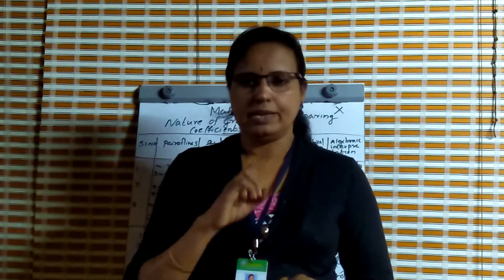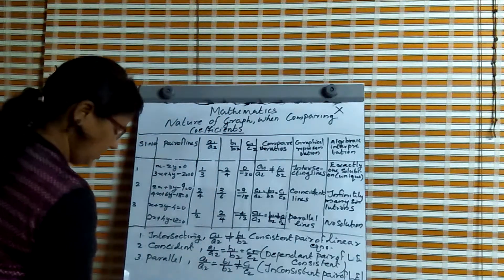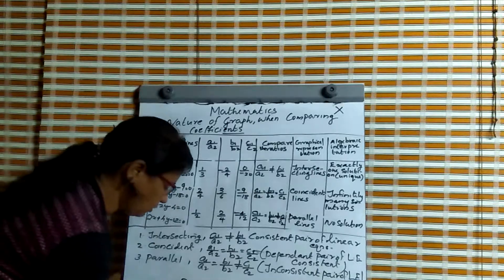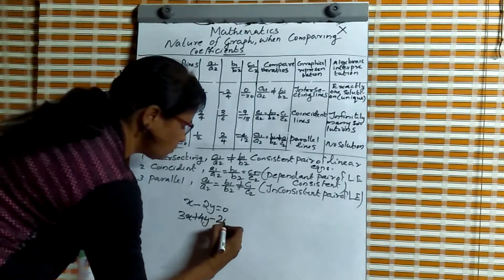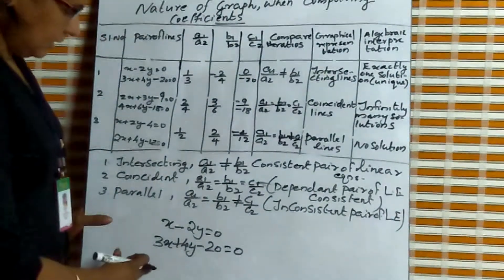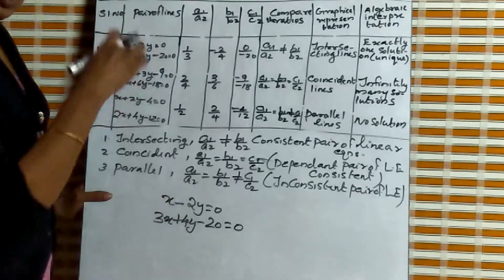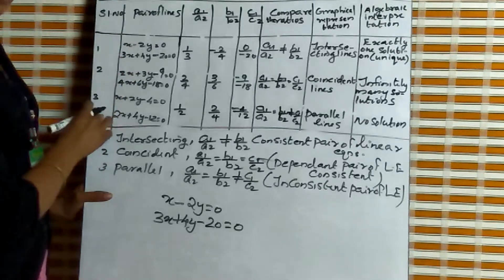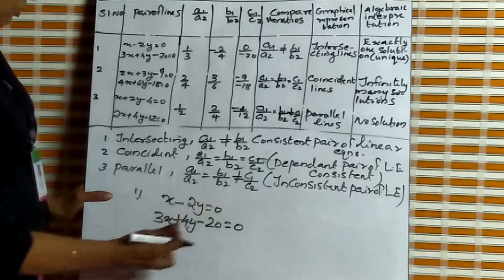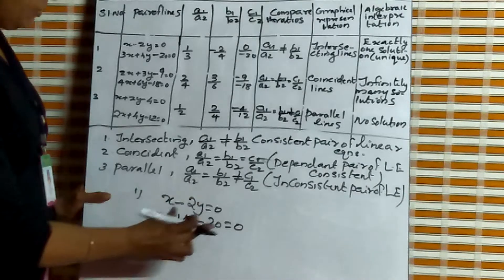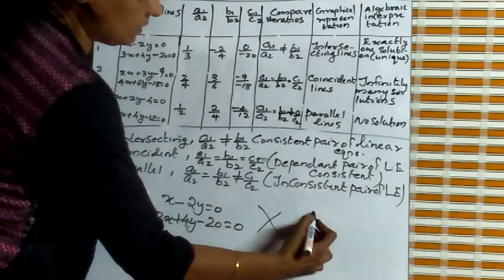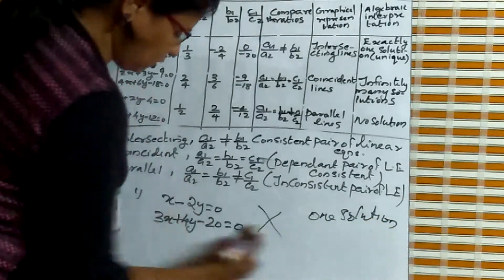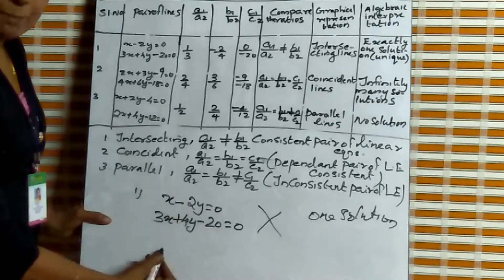When we compare the coefficients of the given linear equations, we can check the type of graph. Here, x minus 2y equals 0 and 3x plus 4y minus 20 equals 0 are two linear equations. We have drawn the graph of these linear equations in previous classes. We can use another way — comparing the coefficients — to find the nature of the graph.